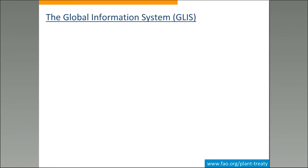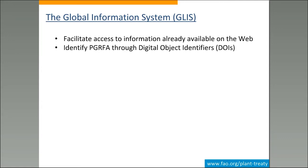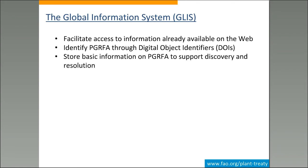The global information system, GLIS, is the software application that does all these functions. Its purpose is to facilitate access to information as it exists — we don't want to copy information into GLIS because, as Article 17 states, we want GLIS to be based on existing systems. So existing systems stay as they are. GLIS is a way of facilitating access to these systems and their interoperability, through identification of PGRFAs via digital object identifiers. What we store in GLIS is just those basic descriptors to support the discovery and resolution functions.